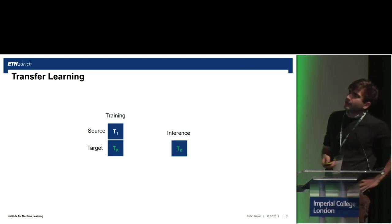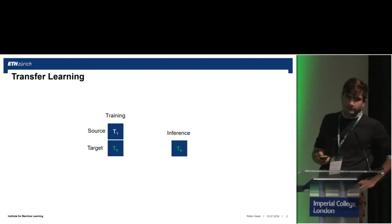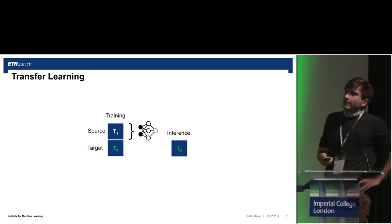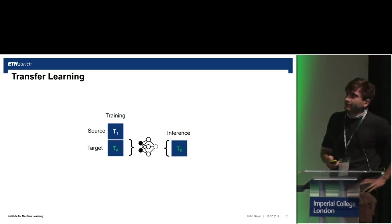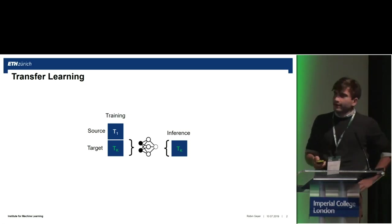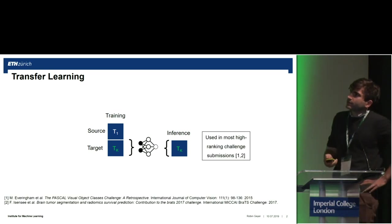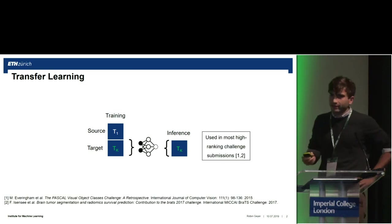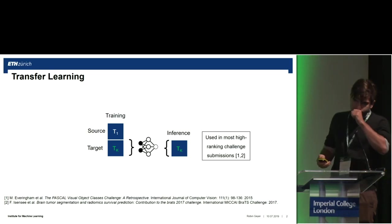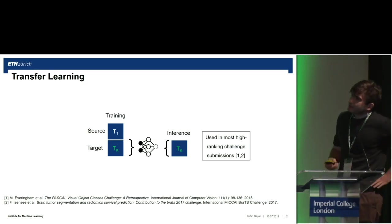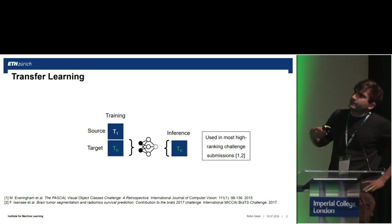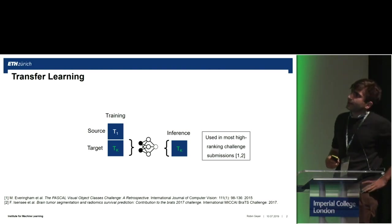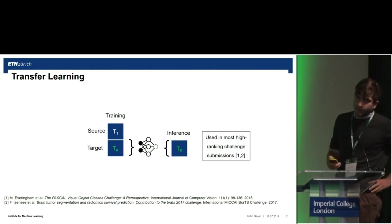In deep learning today, transfer learning means pre-training on a source task and then fine-tuning on a target task. Indeed, transfer learning is an ingredient to most high-ranking challenge submissions. It's especially useful when data is abundant in the source task and limited in the target task.